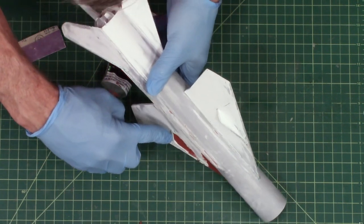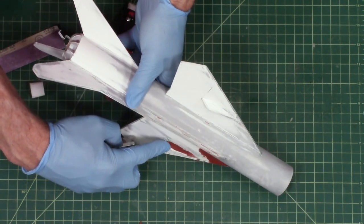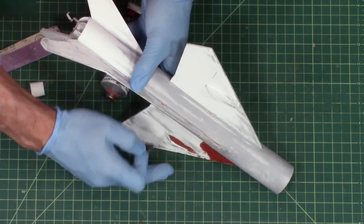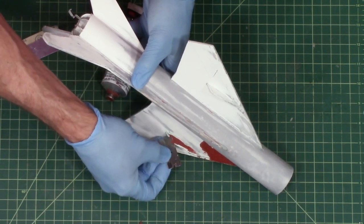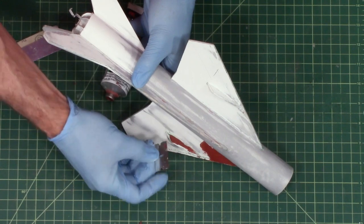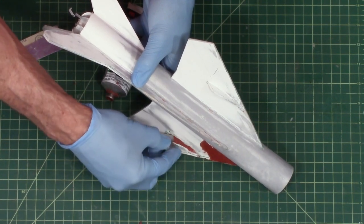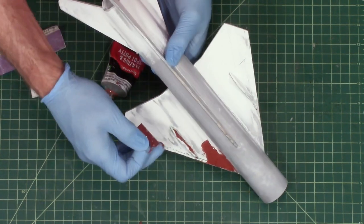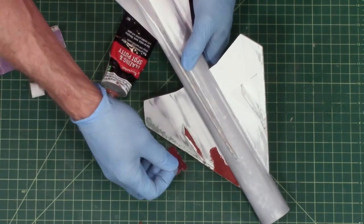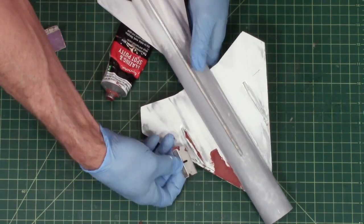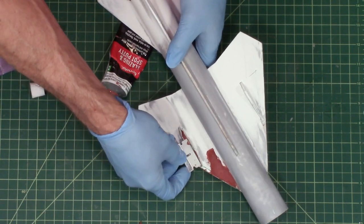You can see this one corner right here, it's been rounded off and it would be nicer if that was nice and square. So I'm going to try to get a little bit of build-up there, like a bump, and then I'll sand it off later and try to make that edge nice and square.